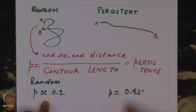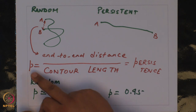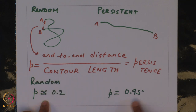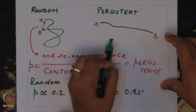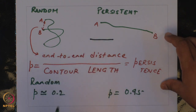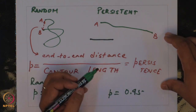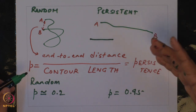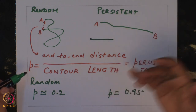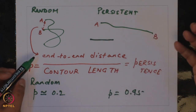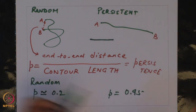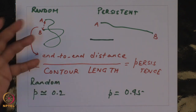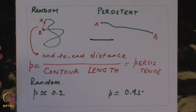The highest possible value of P is 1, because maximum persistence corresponds to a complete straight line where the contour length and end-to-end distance are exactly the same. So we have defined a ratio bounded between 0 and 1. This is one of the simplest ways to quantify persistence.